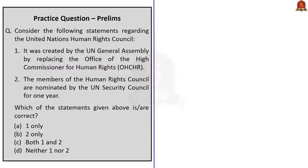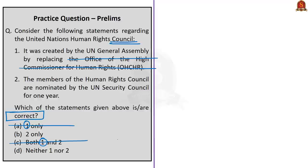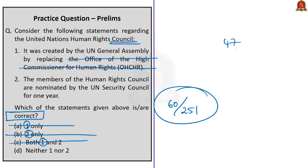The next question is about the United Nations Human Rights Council. Two statements are given and we are asked which are correct. Statement 1 says it was created by the UN General Assembly by replacing the Office of the High Commissioner for Human Rights — this is incorrect, because the council replaced the former UN Commission on Human Rights, not the Office of the High Commissioner. Statement 2 says the members of the Human Rights Council are nominated by the UN Security Council for one year — this is also incorrect, as per paragraph 7 of General Assembly Resolution 60/251, the 47 member states are elected directly by secret ballot by the majority of General Assembly members. Both statements are incorrect, so the answer is Option D.